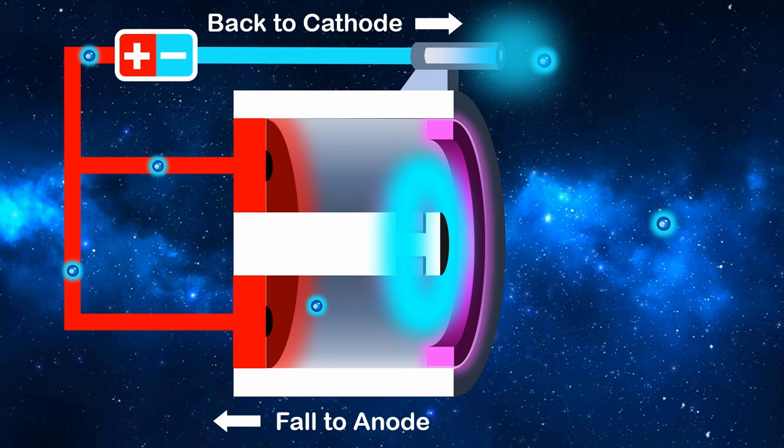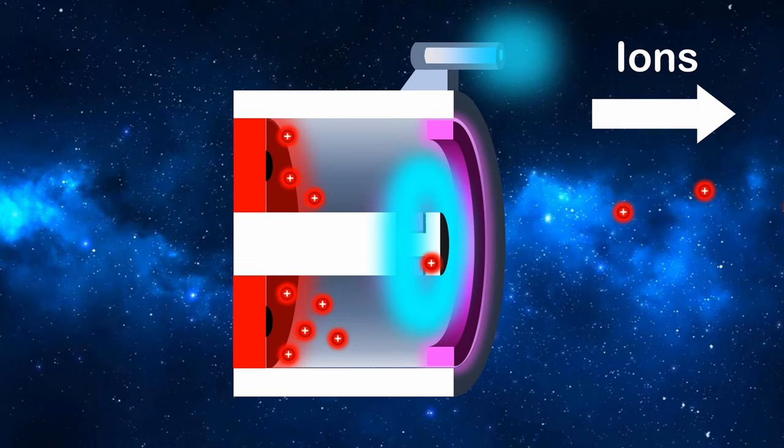So now that we've made our ions, how do we accelerate them out of the channel and generate thrust? Step 3: Virtual Accelerator Grid.